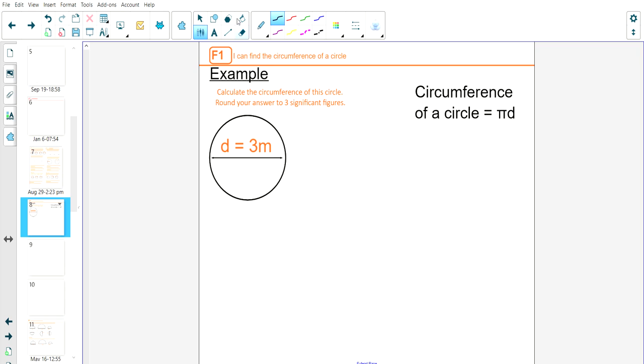I have the circumference of a circle formula, which is pi multiplied by the diameter. In this case our diameter is three meters, so I'll put that in my calculator: pi multiplied by three.